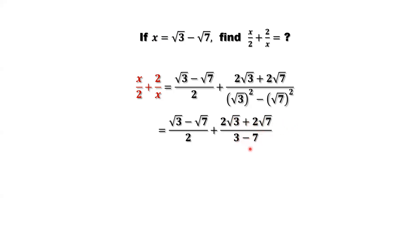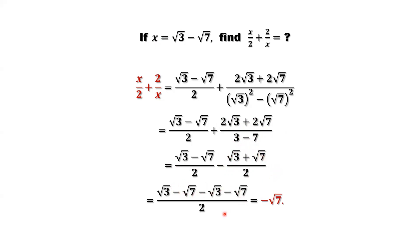There's a negative sign in front. The 2 already cancels one factor from the denominator, leaving denominator negative 4. After simplifying and distributing, you can see that positive square root of 3 and negative square root of 3 cancel each other. We're left with 2 times negative square root of 7 over 2, and canceling the 2 gives the final answer: negative square root of 7.